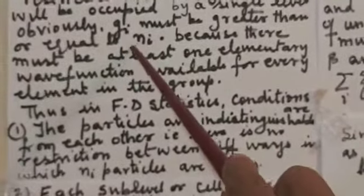So GI must be greater than or equal to NI. Why? Because there must be at least one elementary wave function available for every element in the group. Thus GI is always greater than or equal to NI or greater than that.